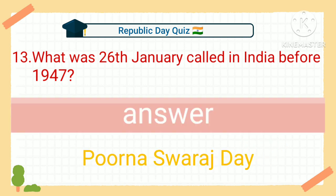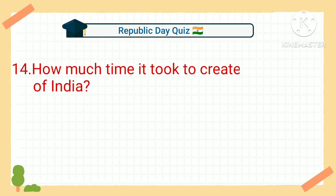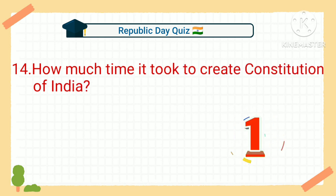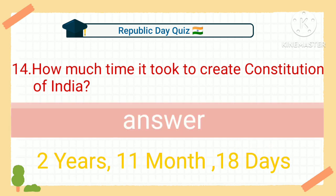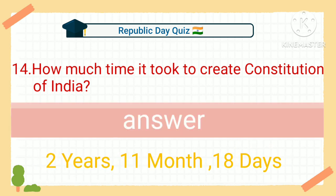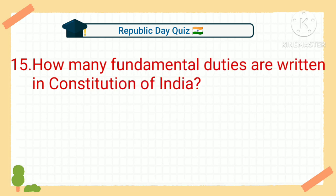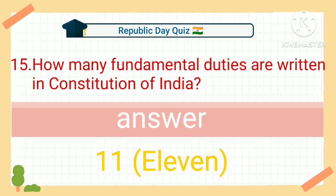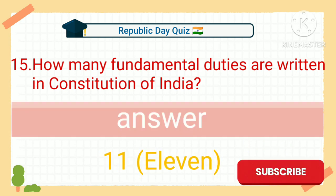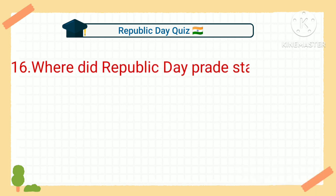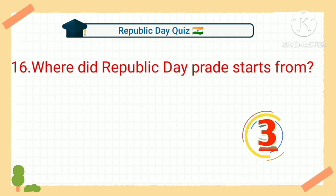Answer: Poorna Swaraj Day. Question number fourteen: how much time did it take to create the Constitution of India? Answer: two years, eleven months, and eighteen days. Question number fifteen: how many fundamental duties are written in the Constitution of India? Answer: 11. Question number sixteen: where does the Republic Day parade start from?